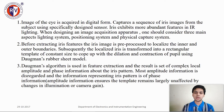Image acquisition: the image of the eye is acquired in digital form and captures a sequence of iris images from the subject using a specially designed sensor. The iris exhibits the most abundant features under proper iris lighting. When designing an image acquisition apparatus, one should consider three main aspects: lighting system, positioning system, and physical capture system. In the iris extraction process, the iris image is preprocessed to localize the inner and outer boundaries. Subsequently, the localized iris is transformed into a rectangular template of constant size to compensate for the dilation and contraction of the pupil using Daugman's Rubber Sheet model.